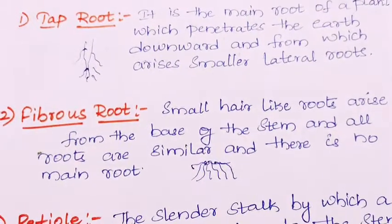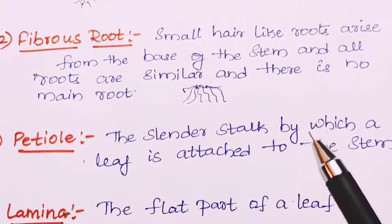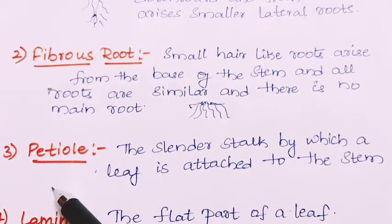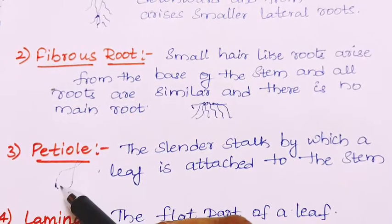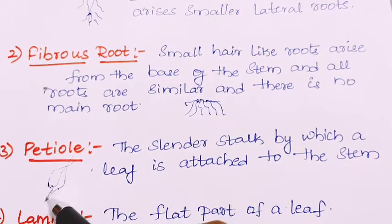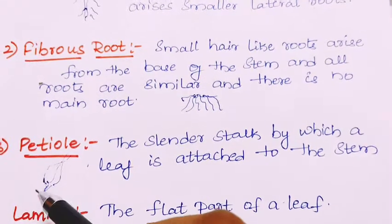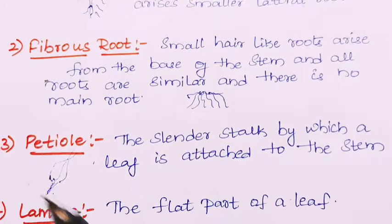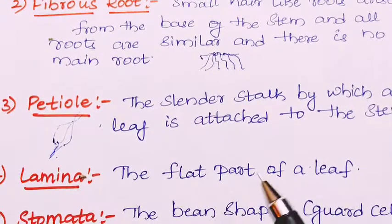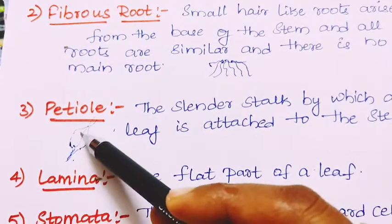Next: petiole. The petiole is the slender stalk by which the leaf is attached to the stem. Next: lamina. The lamina is the flat part of a leaf — when you look at the leaf, this flat portion is called the lamina.